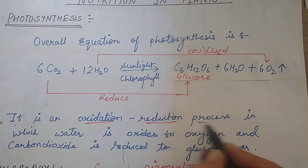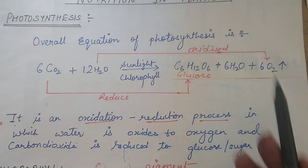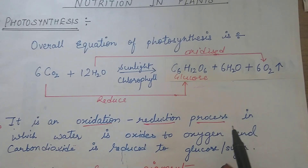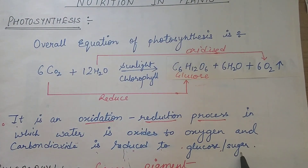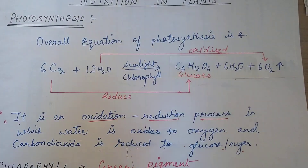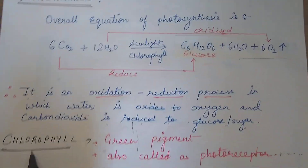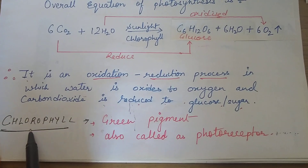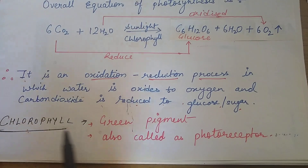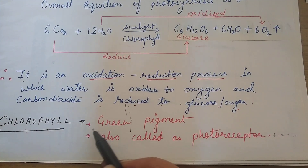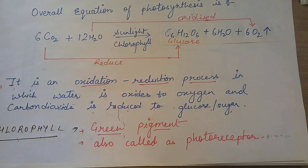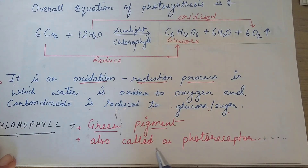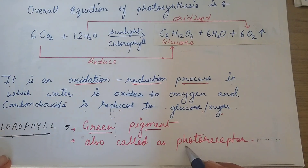It is an oxidation-reduction process in which water is oxidized to oxygen and CO₂ is reduced to glucose, or we can say sugar. The next very important component of photosynthesis is chlorophyll. Chlorophyll is a green pigment present in plants and most importantly it is also called a photoreceptor.